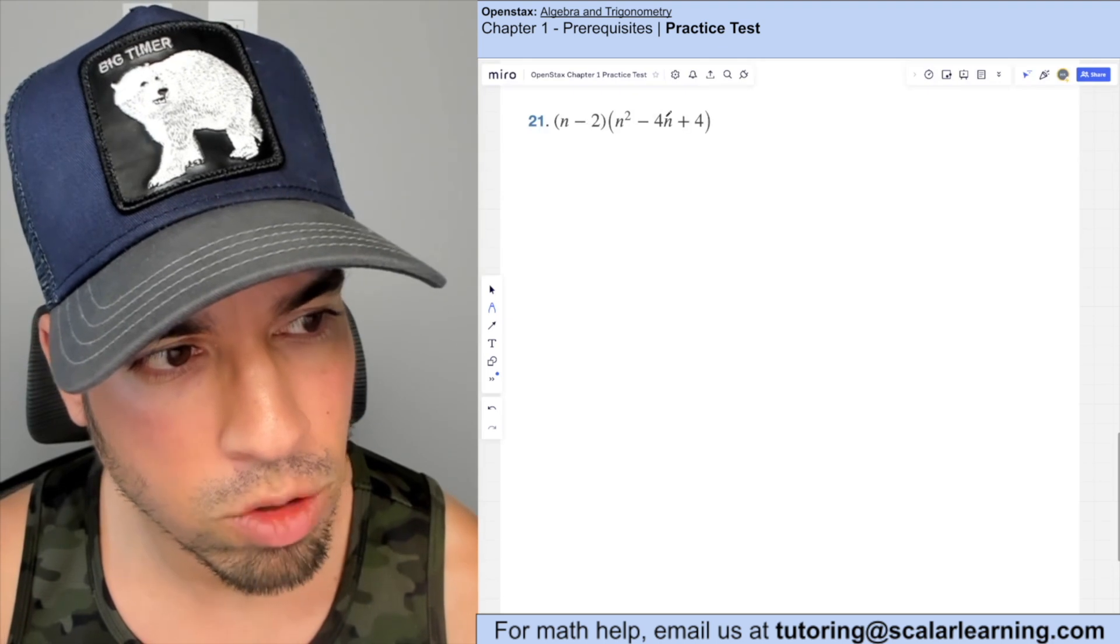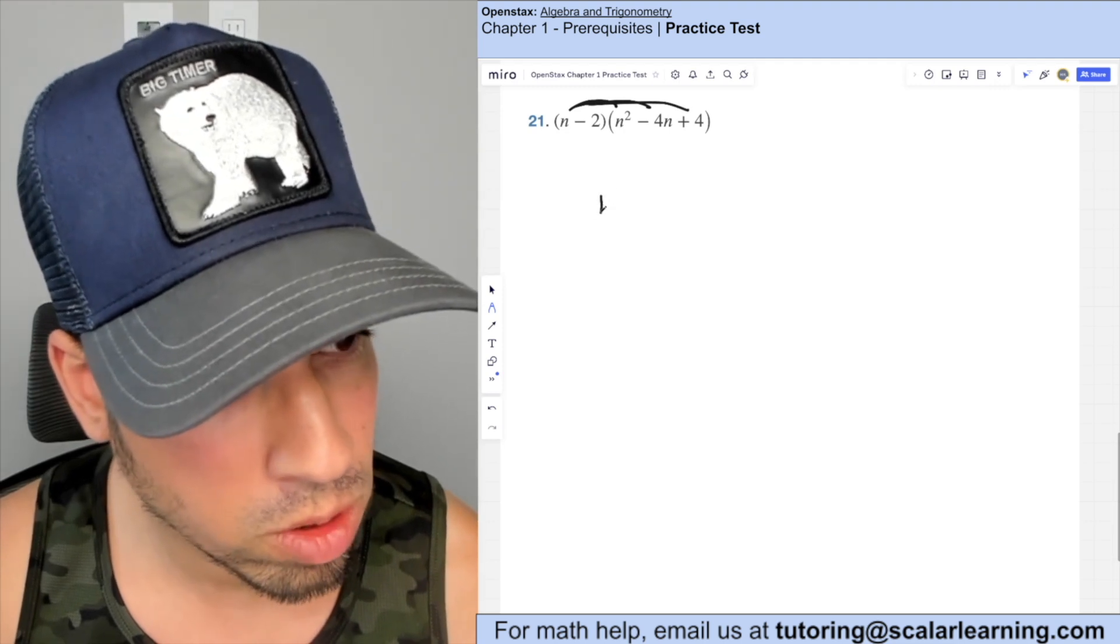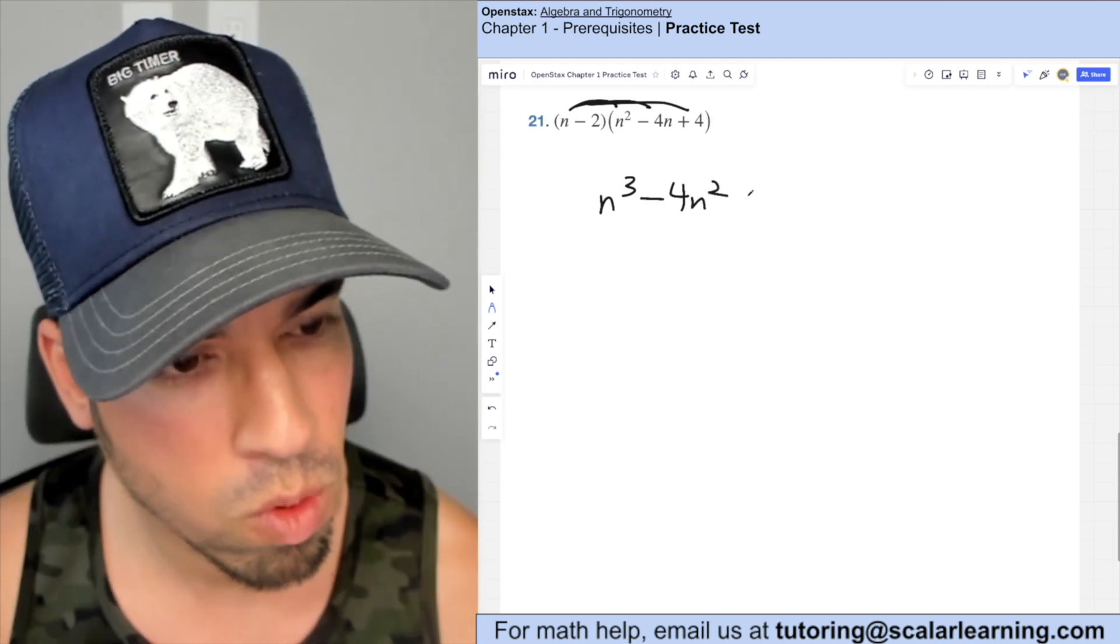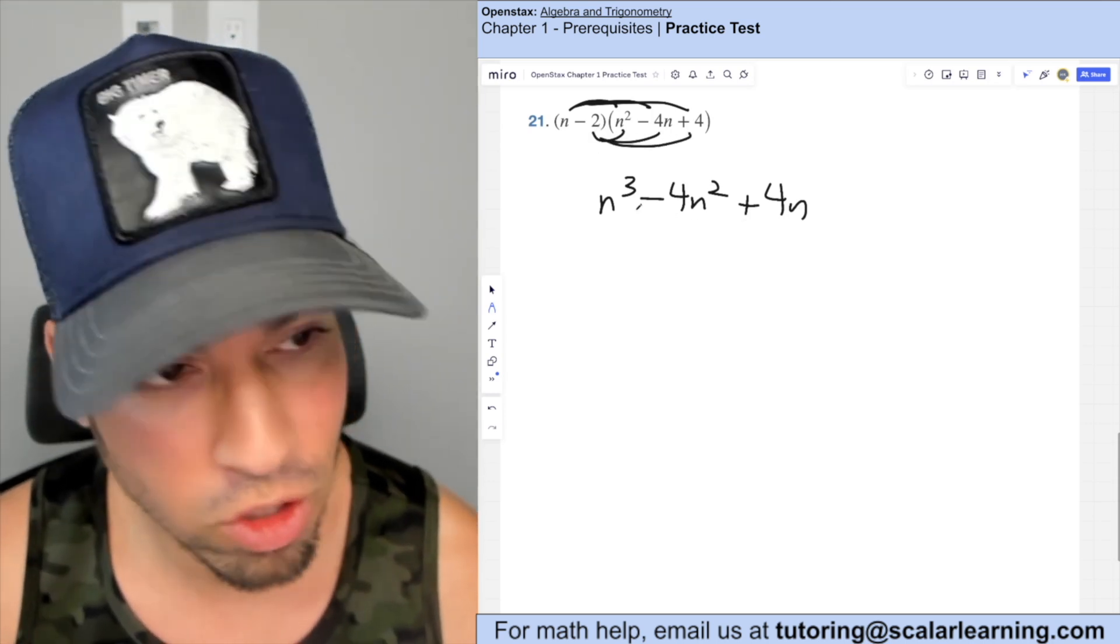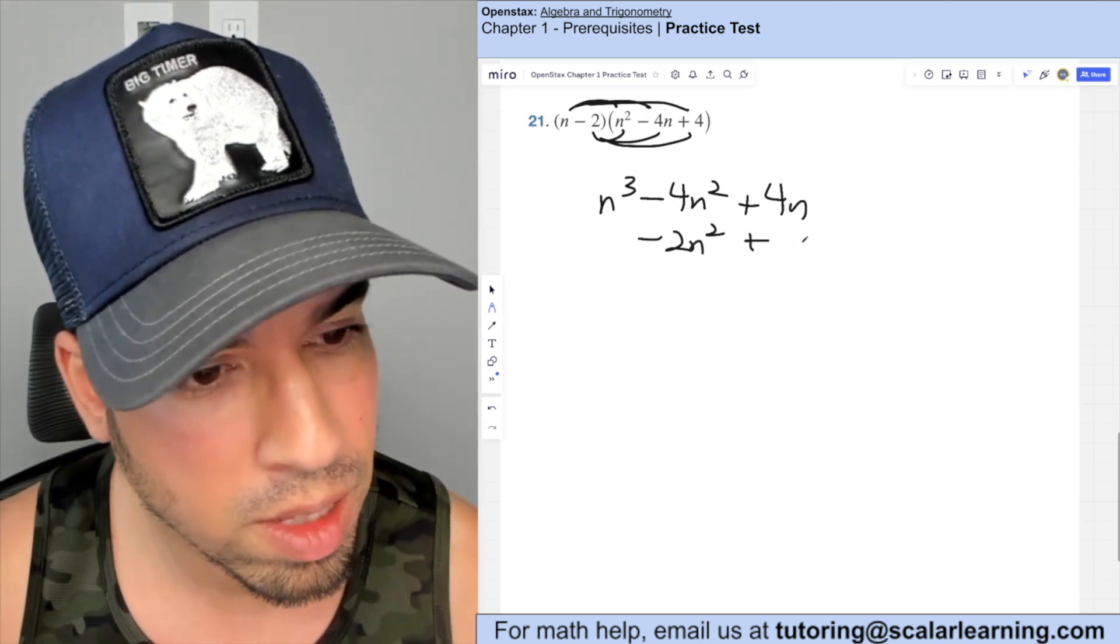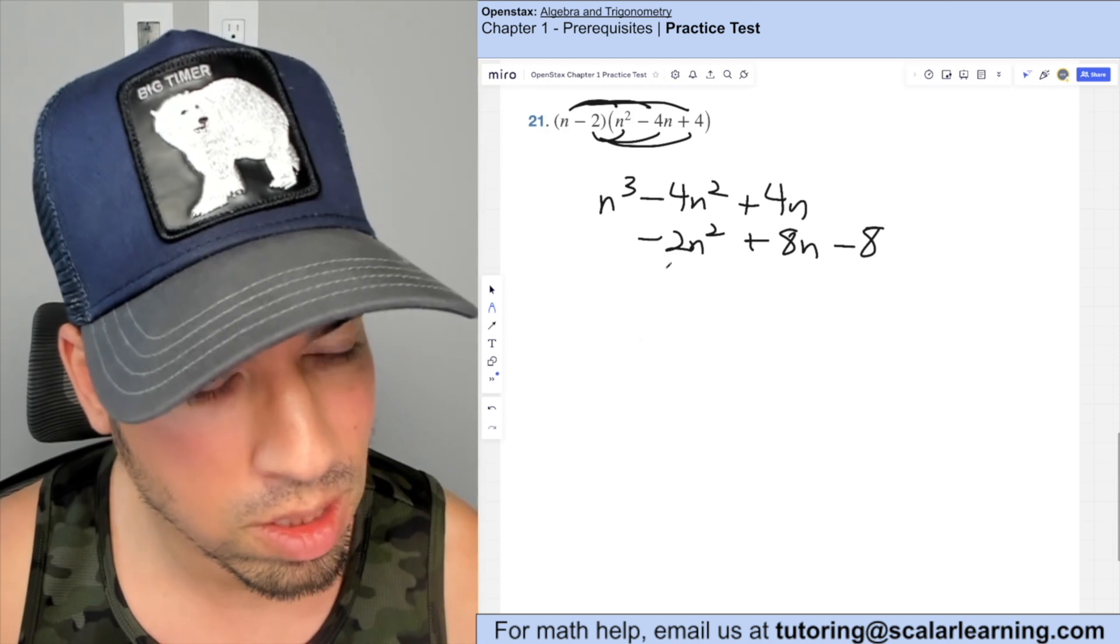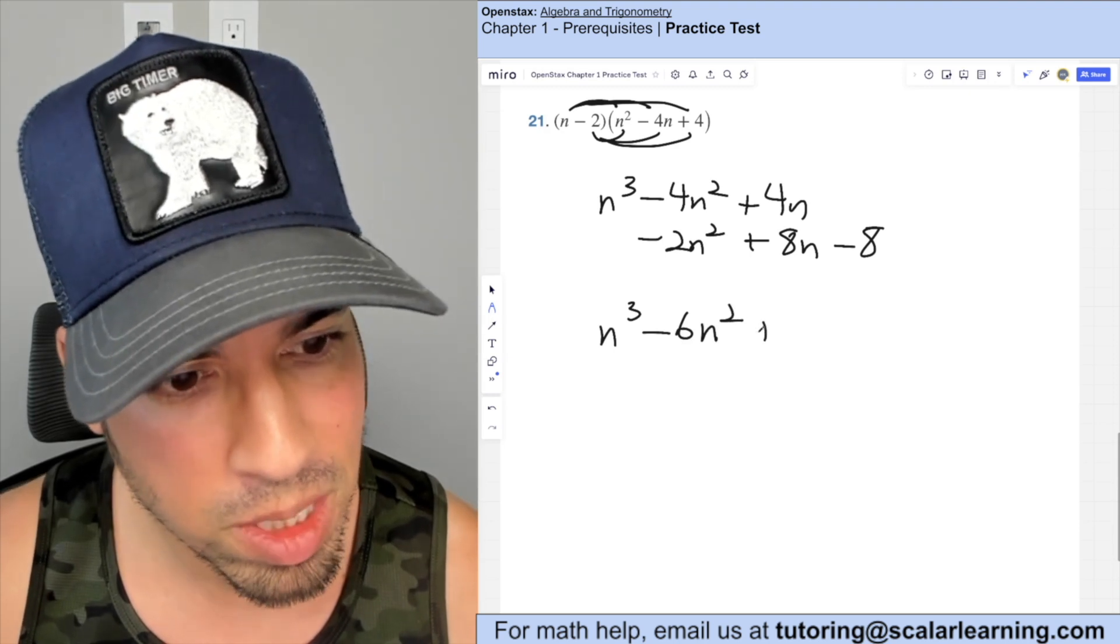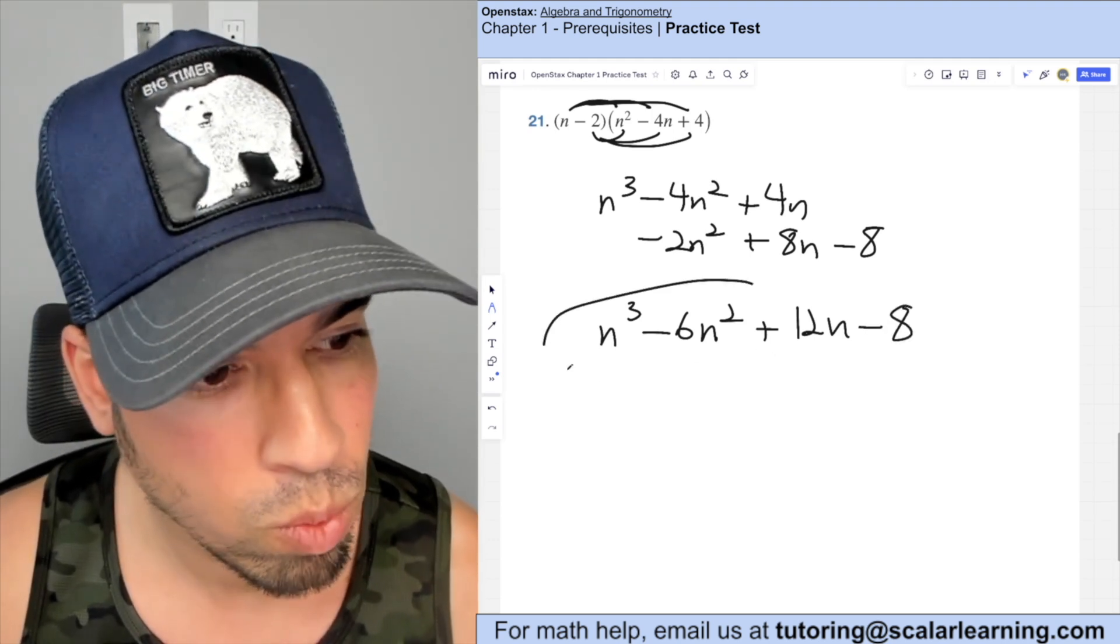Here, what we're doing is we're foiling a binomial times a trinomial. So check it out. First, I'm going to multiply this guy across those n times n squared is n cubed minus four n times n is four n squared. And then n times four is four n. Now we're going to have this one hit all three of those. And I'm going to move it down by one and you're going to see it's going to line up really nicely. So then I got negative two times n squared is negative two n squared plus eight n right the minuses cancel out minus eight. And now I'm going to combine like terms you can see is lined up nicely. So negative four n squared and negative two n squared make negative six n squared that becomes positive 12 n, 12 n excuse me and that becomes minus eight for the win done.